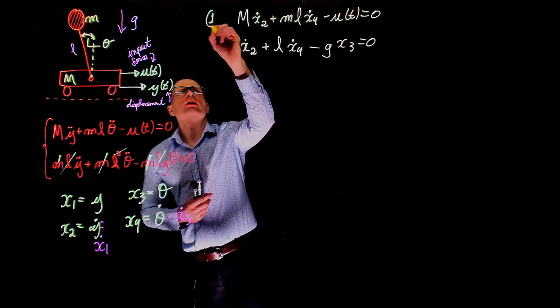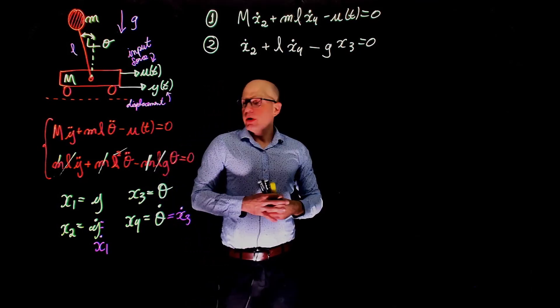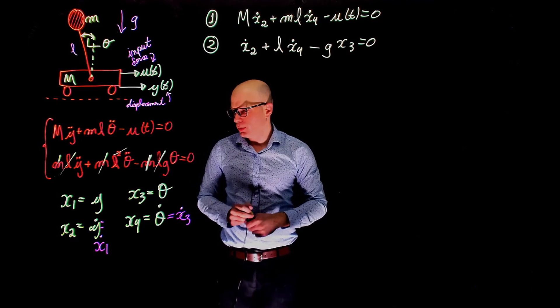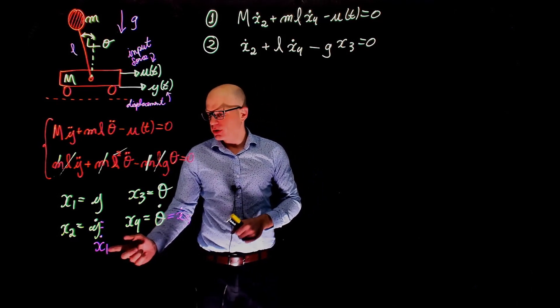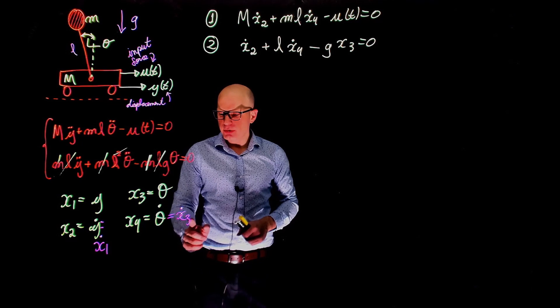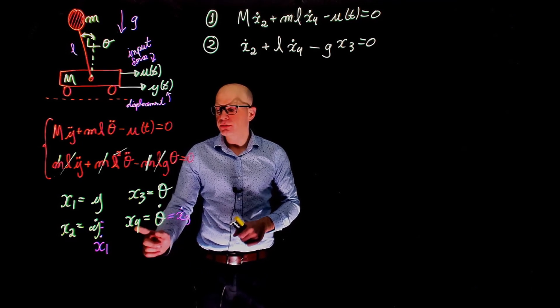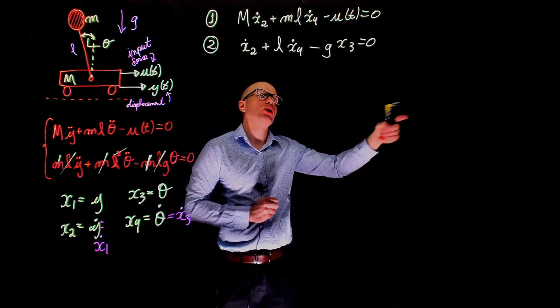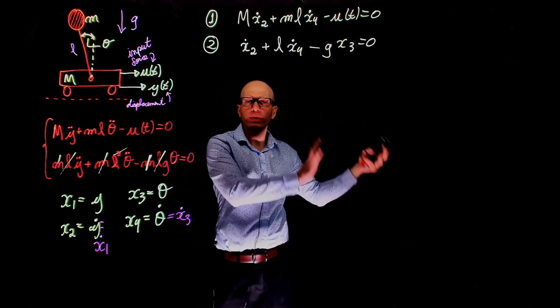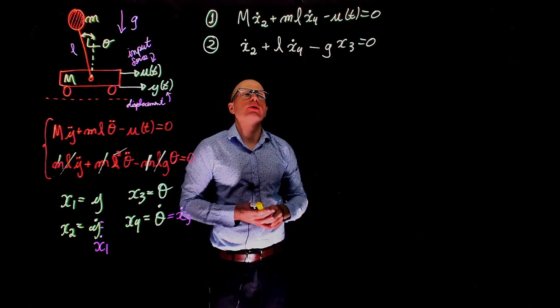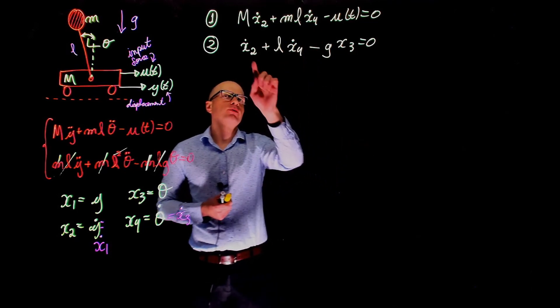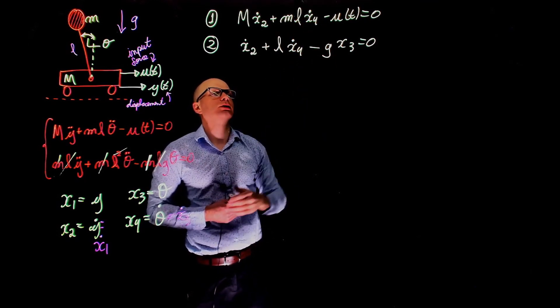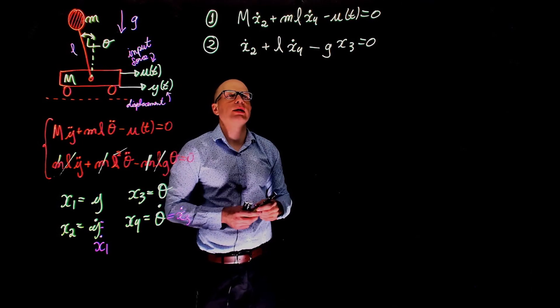So here we have equation one, here we have equation two. Very well. Now we have these equations we have to find the equations for the derivative of the states. We have the equation for the derivative of x1, that is simply x2. And we have the derivative of x3, which is x4. Now we need to find an expression for the derivative of x2 that only depends on the states, not on the derivative of states. And the same for x4. So now the job is very simple. We have to isolate x2 here, replace there, and then isolate x4 here, and replacing the other one, so we can find the equations for x2 dot and x4 dot.